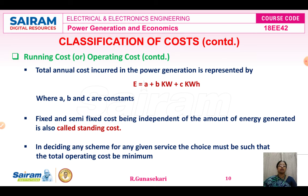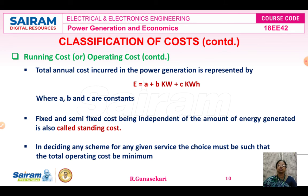The fixed cost and the semi-fixed cost are also called standing cost because both are independent of the amount of energy generated — fixed cost is independent of maximum demand and energy generated, while semi-fixed cost depends on maximum demand but is independent of energy. Therefore, both are called standing cost. When deciding any scheme for a given service, the choice is very important, and we have to reduce the total operating cost to a minimum value.